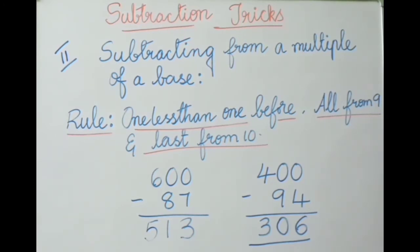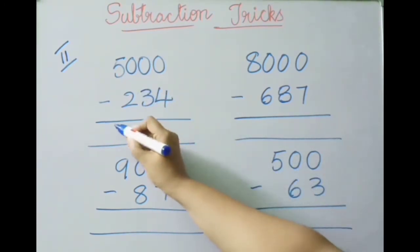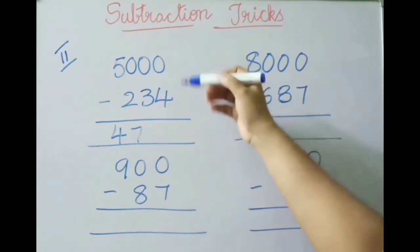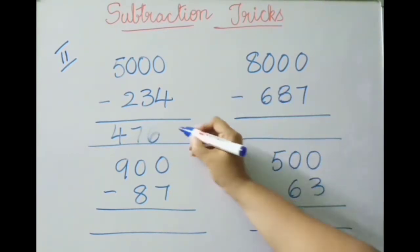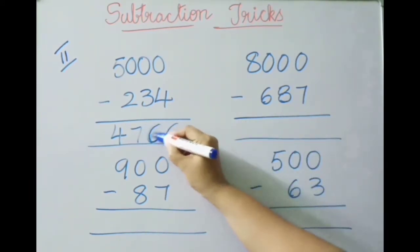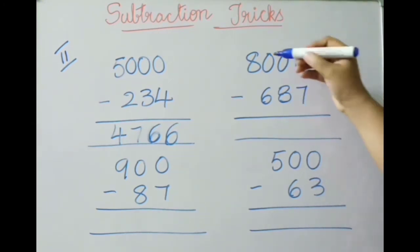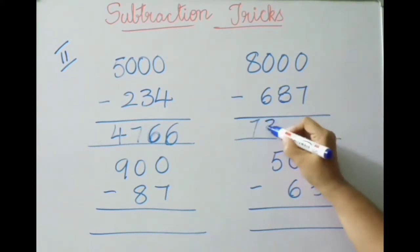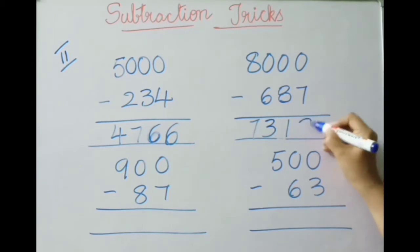See the next examples in method two. Five thousand minus two hundred thirty-four: one less than one before — five minus one is four; all from nine — nine minus two is seven, nine minus three is six; last from ten — ten minus four is six. So the answer is four thousand seven hundred sixty-six. Next: eight thousand minus six hundred eighty-seven — eight minus one is seven; nine minus six is three, nine minus eight is one; ten minus seven is three. The answer is seven thousand three hundred thirteen.